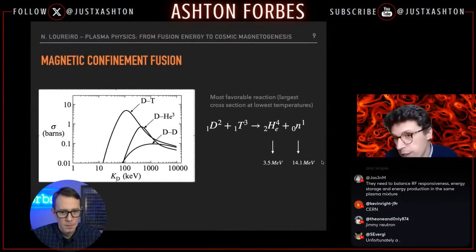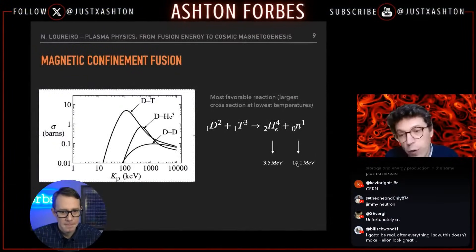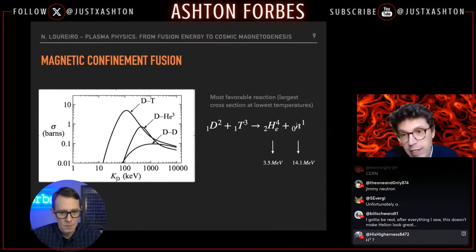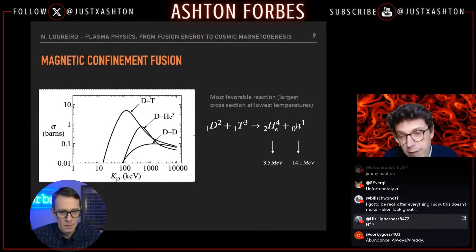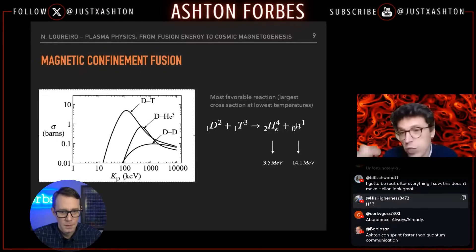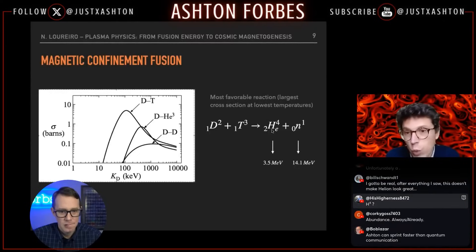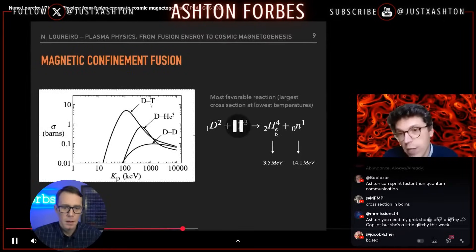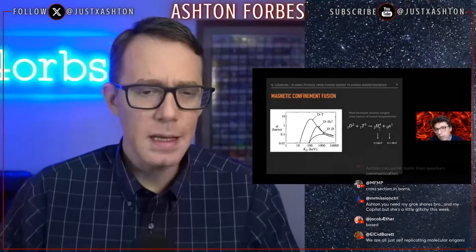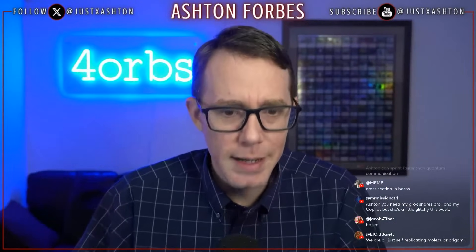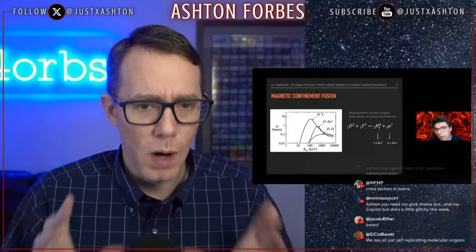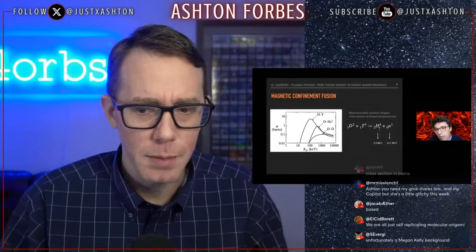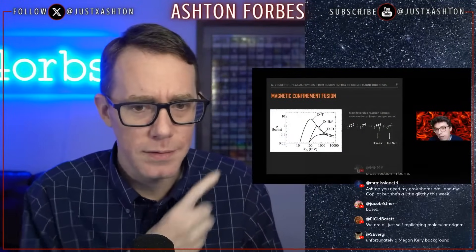It also produces a neutron with 14 MeV energy. The neutron doesn't respond to electric or magnetic fields, so it comes out and you use it to activate some sort of heat cycle. The helium stays confined, and you use the energy from the helium to keep your plasma hot. That's the basis for hot fusion. The first question is: why deuterium-tritium over alternatives? Temperature required is way lower.